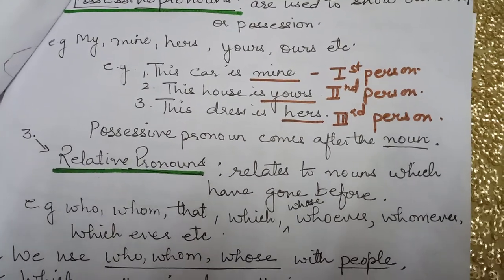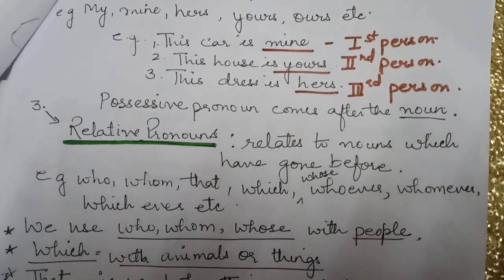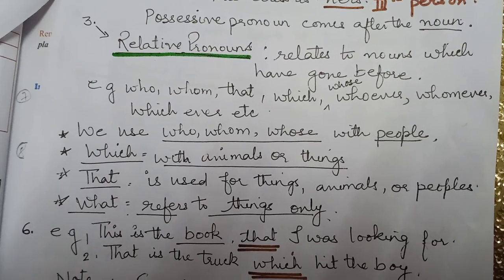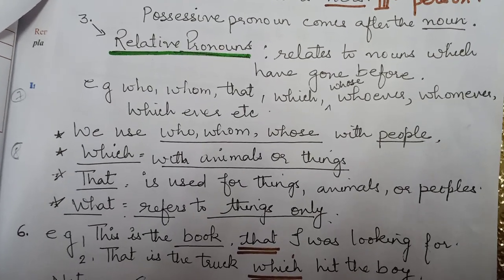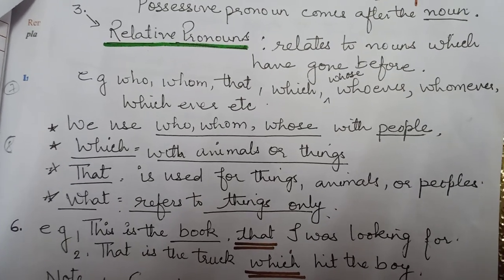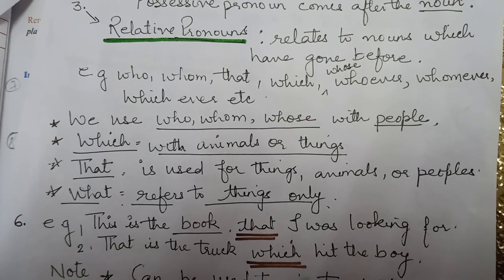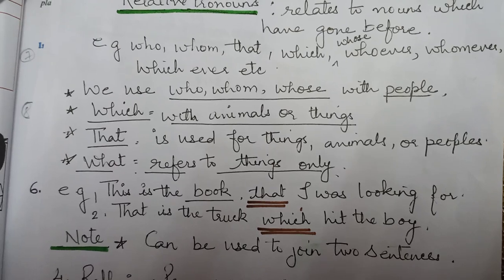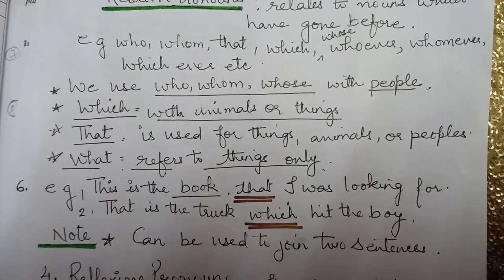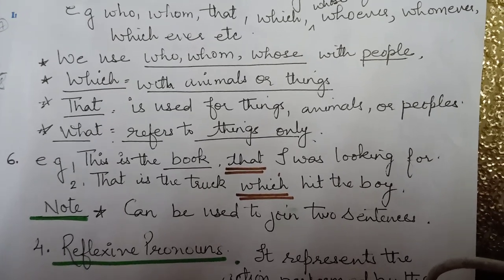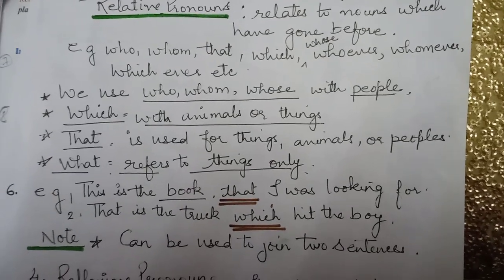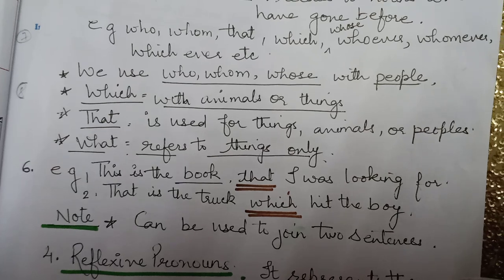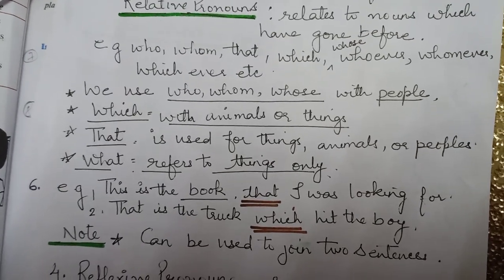Possessive pronouns come after the noun in a sentence. Now, relative pronouns — another kind of pronoun. Relative pronouns relate to nouns which have gone before. For example: who, whom, that, which, whose, whoever, whomever, whichever, etc. We use whom, who, whose with people; which with animals or things; that is used for things, animals, or people; what refers to things only. These relative pronouns can be used to join two sentences. For example: 'This is the book that I was looking for' — here 'that' is the relative pronoun joining the two sentences.